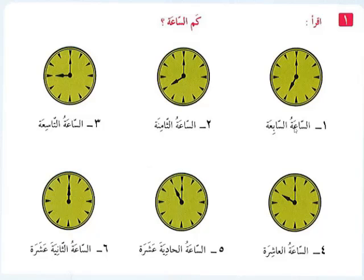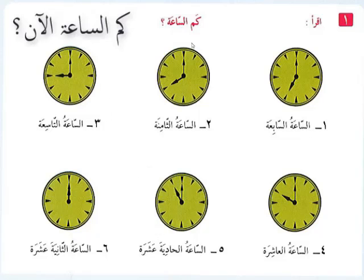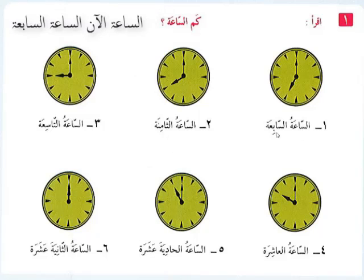Al-sa'atul sabi' — 7 o'clock. You will ask: kamis-sa'atul an? What is the time right now? Al-jawab — the answer: al-sa'atul an, al-sa'atul sabi'atu. It is 7 o'clock.